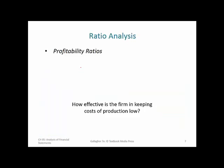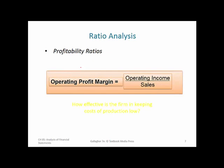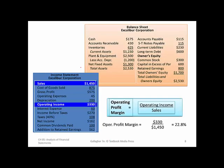Next is the operating profit margin, closely related to gross profit margin. The question here is how effective is the firm in keeping cost of production low. Operating profit margin is defined as operating income over sales. Instead of looking at just gross profit divided by sales, we look at operating income divided by sales — what percent of sales is operating income — which comes out to 22.8%.